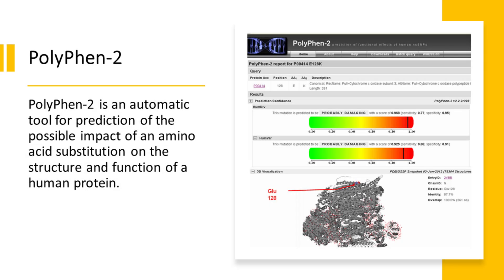PolyPhen-2 is an automatic tool for prediction of the possible impact of an amino acid substitution on the structure and function of a human protein. Automated predictions of this kind are essential for interpreting large data sets of rare genetic variants, which have many applications in modern human genetics research. Uses in recent research include identifying rare alleles that cause Mendelian disease, scanning for potentially medically actionable alleles in an individual's genome, and profiling the spectrum of rare variation.